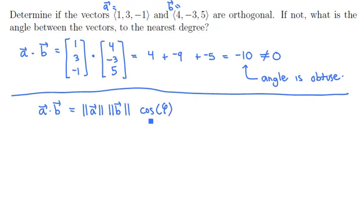If we solve this for the cosine of phi, we get cosine of phi is equal to A dot B divided by the length of A times the length of B.